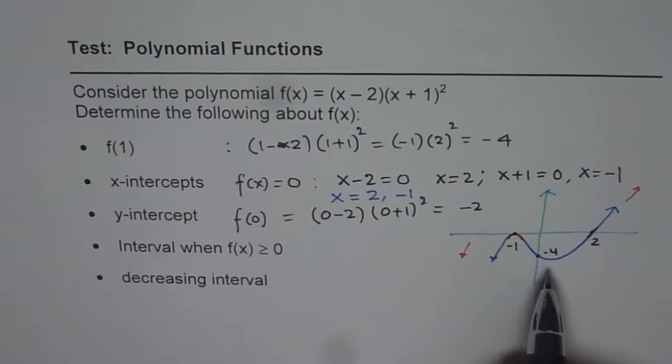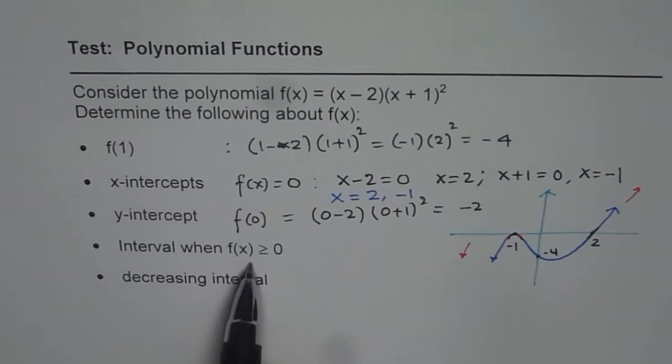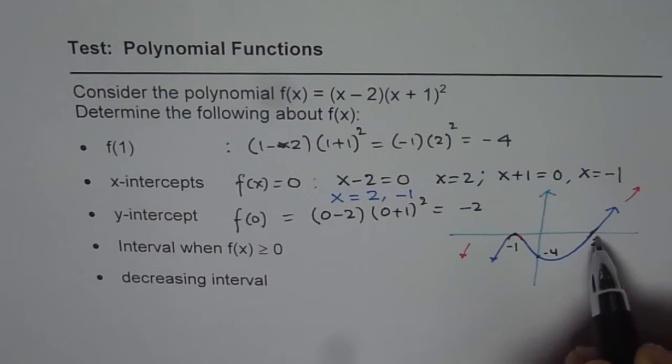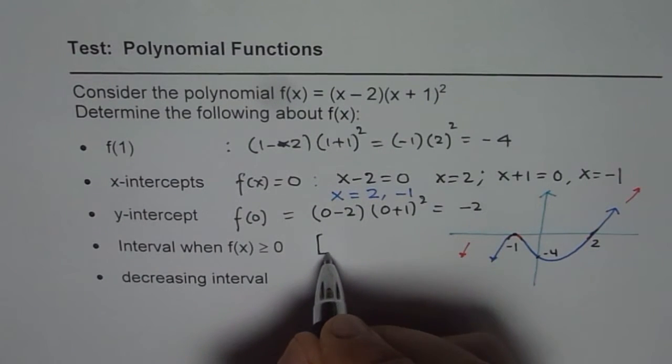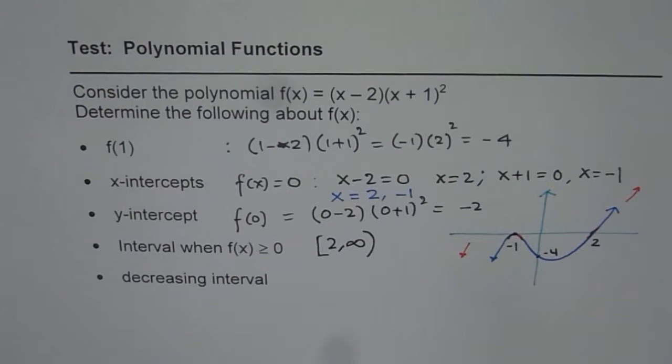Now, that is not a part of the question but we are trying to figure out what is the interval when f(x) is greater than or equal to 0. So clearly it is after 2 and you have to include 2. So the interval is including 2 to infinity. So that is how you have to write down your answer.